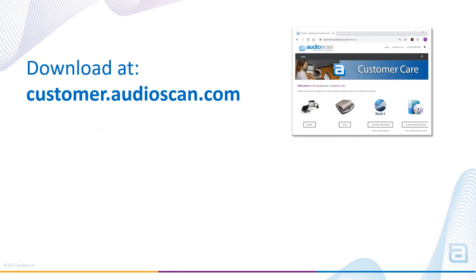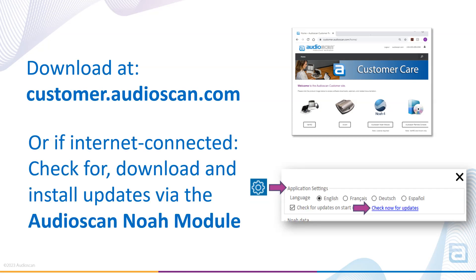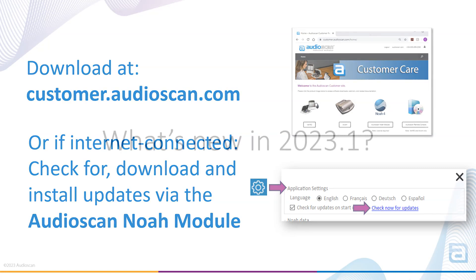As always, the no-charge software update is available for download on our customer site at customer.audioscan.com. Software updates can also be done directly from the AudioScan NOAA module by selecting Settings and clicking Check Now for Update. Note that a checkmark beside Check for Updates on Startup means that you will be notified with a pop-up window when new software versions for your AudioScan equipment and NOAA module are available.